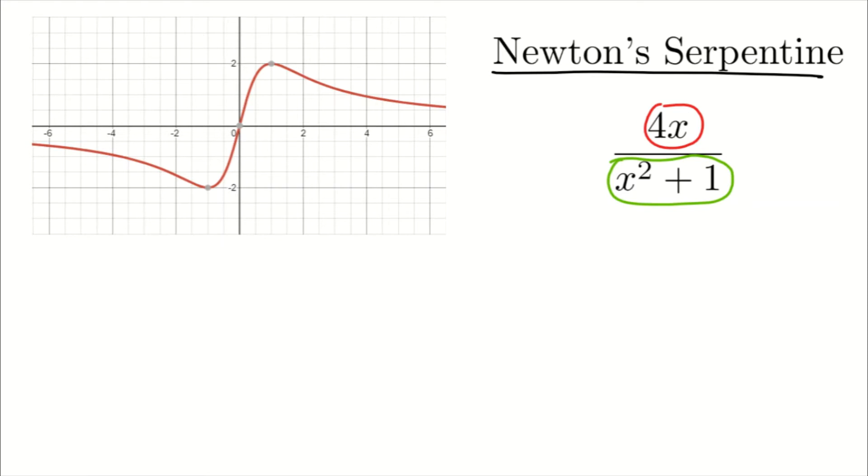We can write that y as a function of x is equal to - let me just rewrite this function once again. In the denominator, you have x squared plus 1. In the numerator, you have 4x.